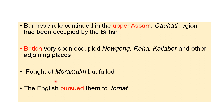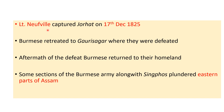A battle took place between British and Burmese forces at a place called Moramukh, where the Burmese were defeated by the English. The Burmese then started to retreat and go back. As the English forces advanced, the Burmese kept going backwards, and the English pursued them to Jorhat.